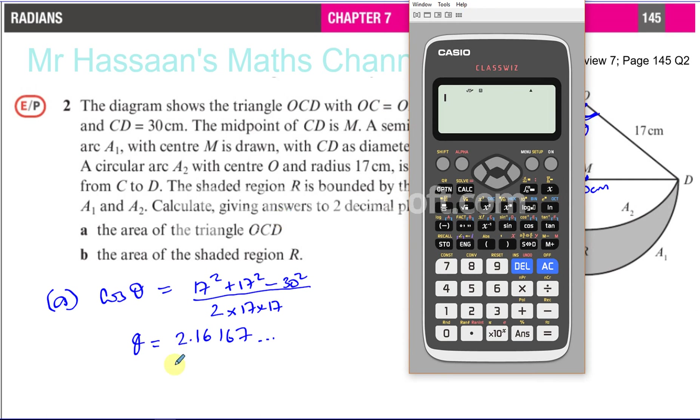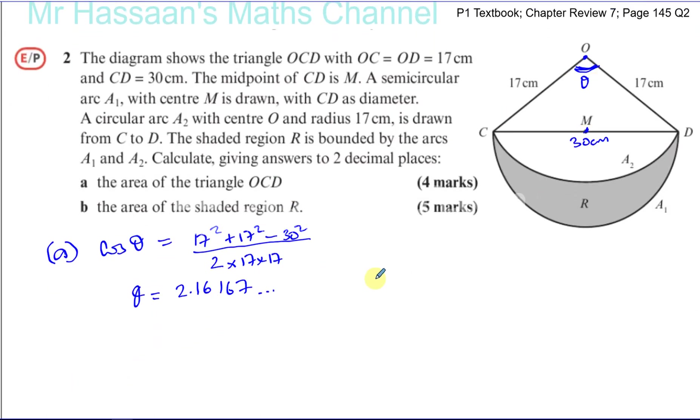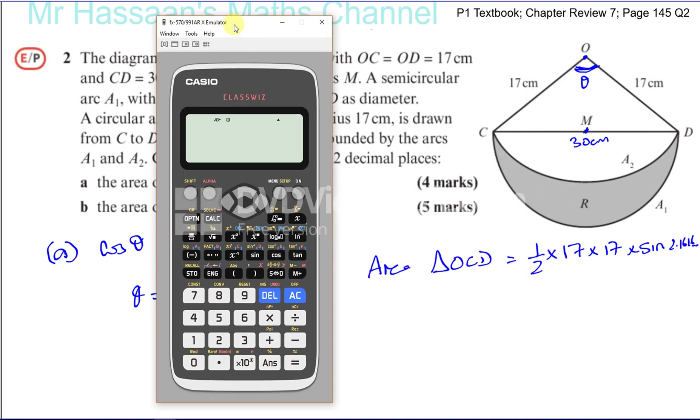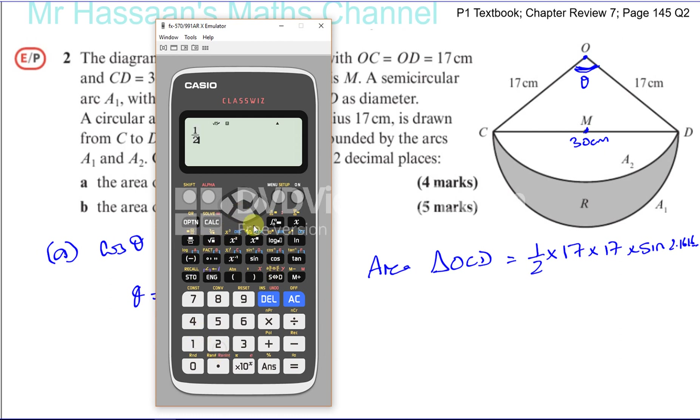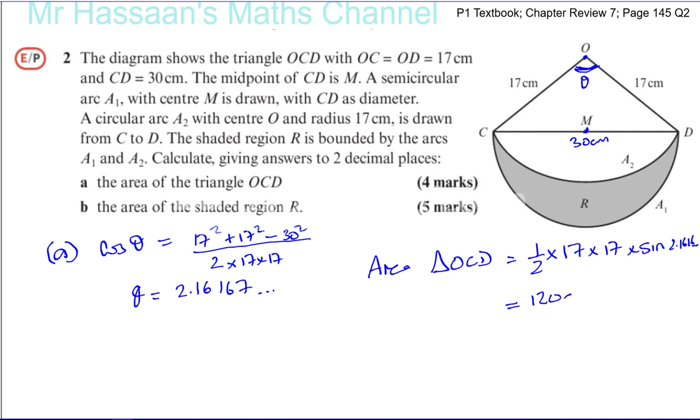So now I need to find the area of the triangle. So the area of the triangle OCD is going to be given by a half times the two sides that make the angle 17 times 17, a half AB sine of the angle theta, which I just found as 2.16167. So I'm just going to now stick that in my calculator, so I have a half times 17 times 17, so that's 17 squared, times the sine of the angle which I stored under A. And that gives me 120. So the area of the triangle is 120 square centimeters.